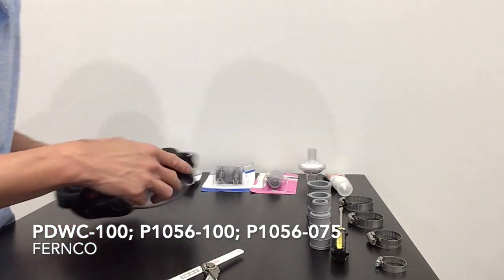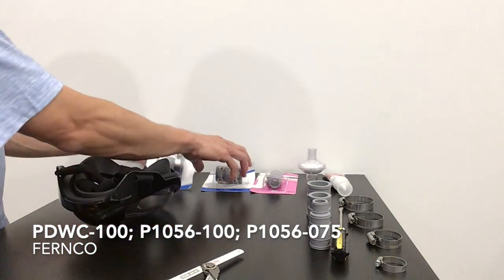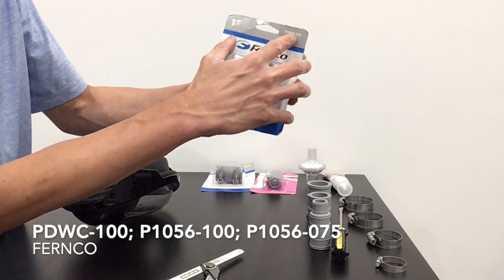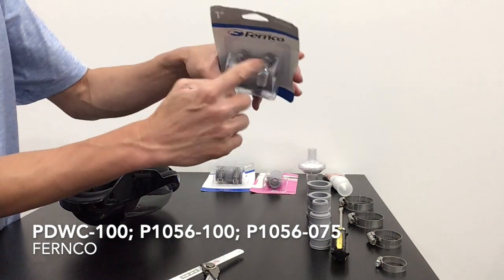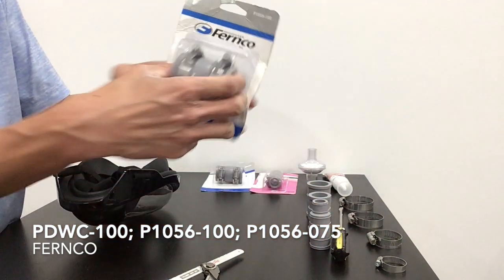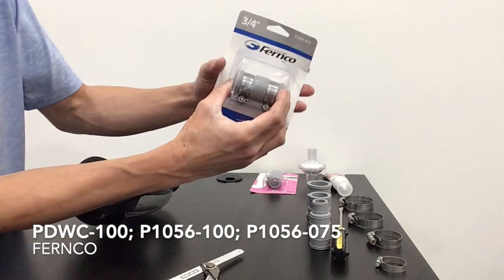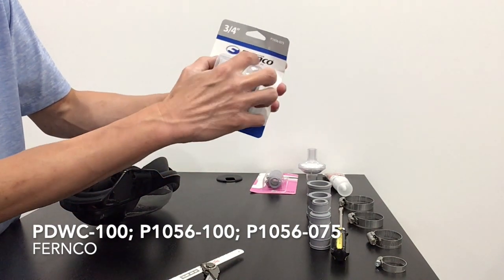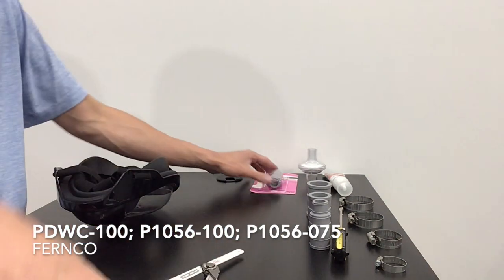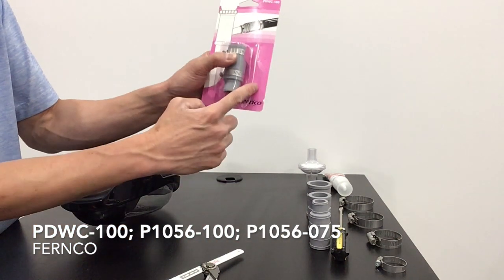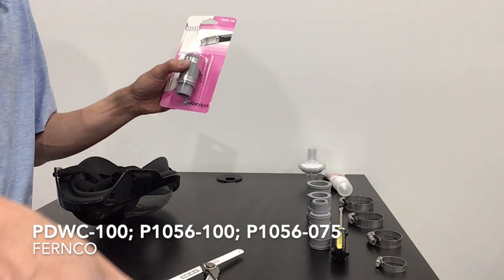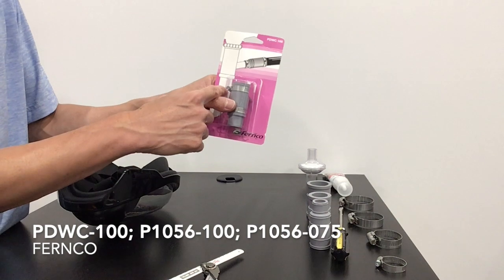Next, you're going to take a Fernco P1056-100 and take it out of the packaging. Remove these little o-ring things and put them on the side. You're going to take the three-quarter inch Fernco P1056-075 out of the package as well. And you're going to take a Fernco PDWC-100, take it out and take off the rings as well.